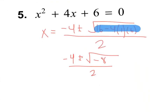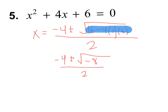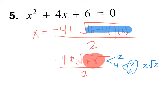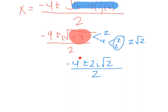In problem 5, the discriminant is not a perfect square and also negative. The fix is the same: place an i out front and change it to a positive. But now 8 can also be simplified — 8 factors into 4 and 2, giving 2 radical 2. With the i out front, that becomes 2i radical 2. So the final answer before simplification is negative 4 plus or minus 2i radical 2 over 2. Dividing everything by 2, the final answer is negative 2 plus or minus i radical 2.